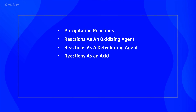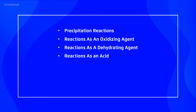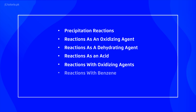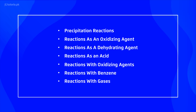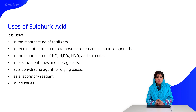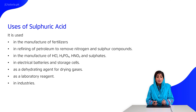Sulfuric acid acts as an oxidizing agent and a dehydrating agent — it removes water molecules, for example from formic acid and oxalic acid. It also acts as a sulfonating agent and reacts with gases. It is used in the manufacture of hydrochloric acid, orthophosphoric acid, nitric acid, and sulfates.